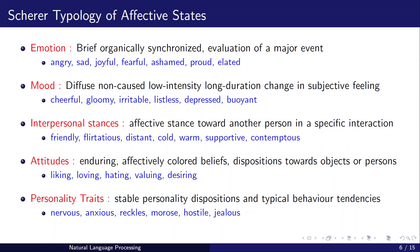A famous psychologist, Scherer, has defined affective states as: emotion, mood, interpersonal stances, attitudes, and personal traits. Emotion is defined as a brief, organically synchronized evaluation of a major event — keywords include angry, sad, joyful. Mood is diffused, non-caused, low intensity. Interpersonal stances relate to another person — keywords include friendly, distant, warm, supportive.